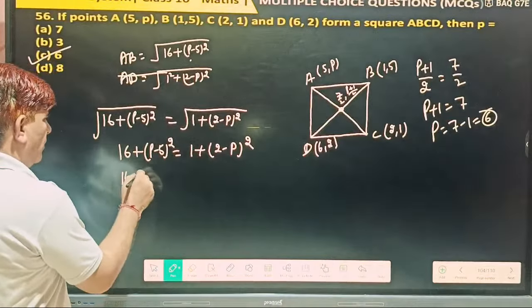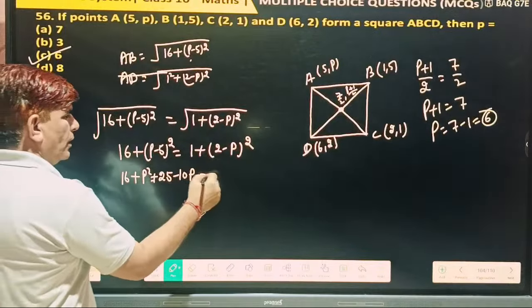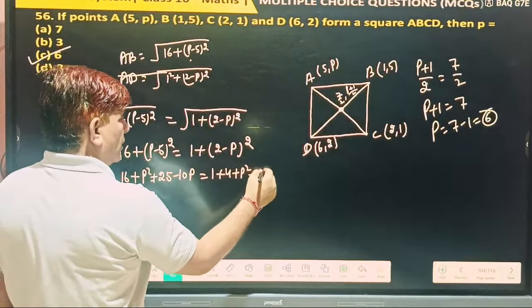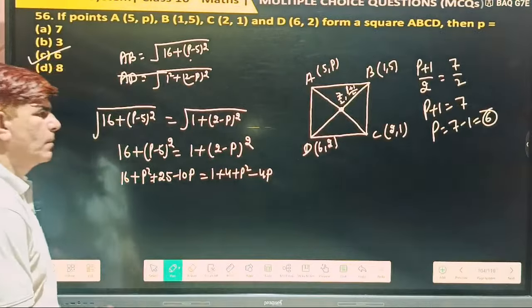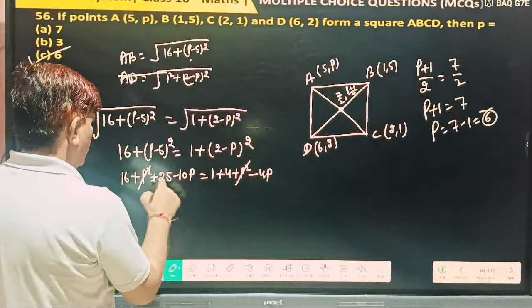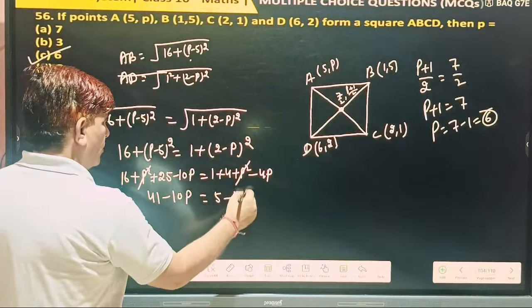16 plus P square plus 25 minus 10P equal to 1 plus 4 plus P square minus 4P. P square cancel P square. It's meaning 41 minus 10P is equal to 5 minus 4P.